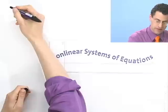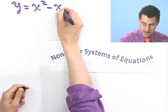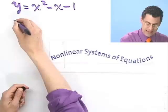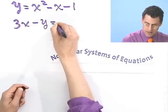Well let's now consider another example of a system of nonlinear equations that we want to solve simultaneously. So suppose that we were handed y equals x squared minus x minus 1, and at the same time 3x minus y equals 4.